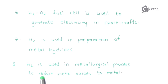Hydrogen is also used in metallurgical processes to reduce metal oxides and form metals. Metals are obtained from ores, and since most metals exist in the form of oxides, the metal oxides are treated with hydrogen. Hydrogen removes the oxygen from the metal oxide, and the resulting metal can then be purified. Among various reducing agents, hydrogen is widely used in the reduction of metal oxides to produce metals.